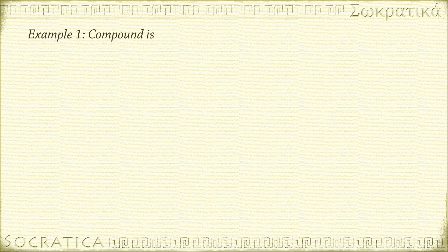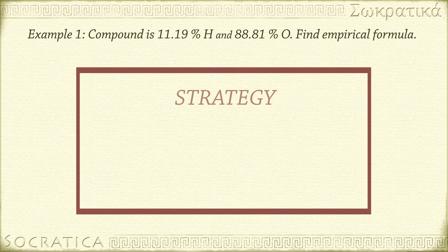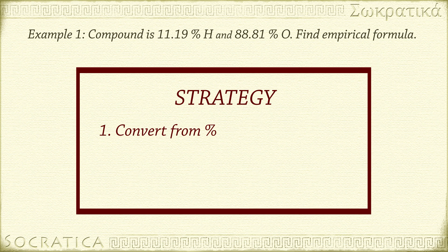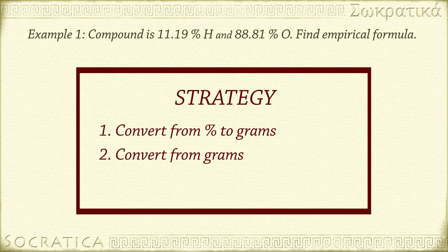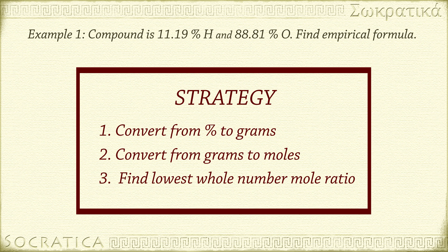We have a compound that is 11.19% hydrogen and 88.81% oxygen. What is the empirical formula? Here's our strategy. Step 1: convert from percents to grams. Step 2: convert from grams to moles. Step 3: find the lowest whole number mole ratio.